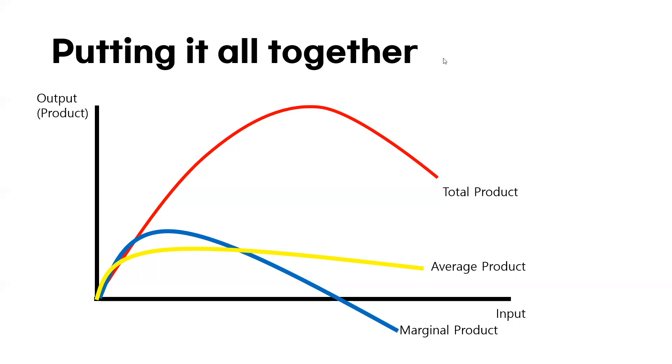Now, the marginal product after a certain point, it diminishes. So, this is showing the law of diminishing marginal return. What was it? Sorry. It's the law of diminishing marginal return.